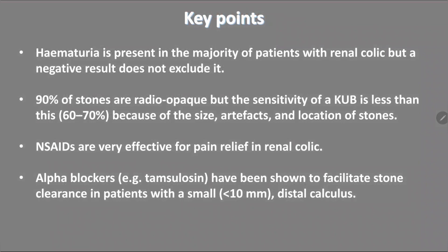Key points: Hematuria may be present in the majority of renal colic cases, but if negative it does not exclude renal colic. 90% of stones are radio-opaque and will appear on KUB, but only 60% are detected due to stone size, artifact, and location. NSAIDs are the most effective pain management; if contraindicated, use paracetamol IV; if ineffective, the last option is opiates. Alpha blockers like tamsulosin can facilitate stone clearance in small, distal, uncomplicated renal stones.